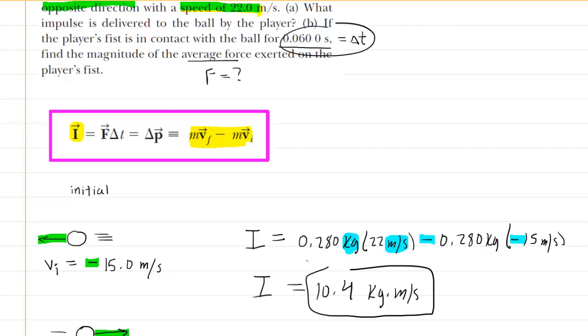We have a time interval, we have an impulse. If only there was an equation that related those three items together. Of course there is, this is physics, there's always an equation for it. We have it right here: impulse equals force times the time interval.